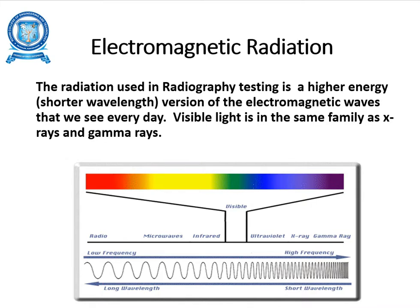The radiation used in radiographic testing is higher energy, that is shorter wavelength, versions of electromagnetic waves. Visible light is in the same family as x-rays and gamma rays. In the electromagnetic spectrum diagram, high frequency and shorter wavelength includes ultraviolet, x-rays, and gamma rays, while long wavelength includes radio waves, microwaves, and infrared rays, which are of low frequency.